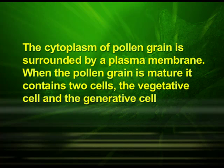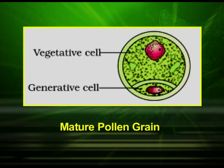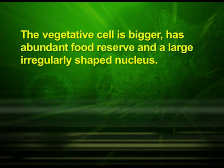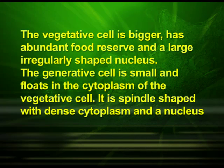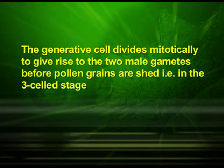When the pollen grain is mature it contains two cells: the vegetative cell and the generative cell. The vegetative cell is bigger, has abundant food reserves and a large irregularly shaped nucleus. The generative cell is small, floats in the cytoplasm of the vegetative cell, and is spindle-shaped with dense cytoplasm and a nucleus. In over 60 percent of angiosperms, pollen grains are shed at the two-cell stage. In the remaining species, the generative cell divides mitotically to give rise to two male gametes before the pollen grains are shed — that is the three-cell stage. During fertilization, when the pollen grain reaches the stigma, the intine grows out through a germ pore into a slender pollen tube.